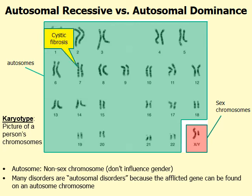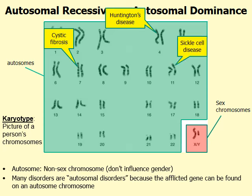For instance, you might have heard of the disorder called cystic fibrosis. The gene that causes it has been located on chromosome 7, which is an autosome, and that's why cystic fibrosis is an autosomal disorder. Huntington's disease is another example of an autosomal disorder because the gene is on chromosome 4, which is an autosome. Sickle cell disease is another example; the gene for sickle cell has been found on chromosome 11, which is also an autosome.